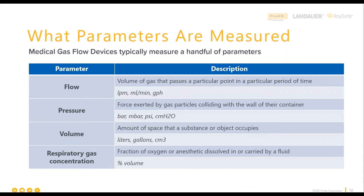There are four main functions of medical gas equipment — four main parameters. They measure flow, pressure, volume, and concentration. I want to go into a bit of detail on each so we fully understand what they mean and how they're measured.